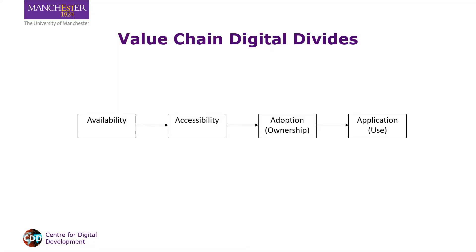Listen to policy makers and strategists and scholars when they talk about the digital divide and you'll find that they actually talk about different things in the value chain. Sometimes they talk about whether or not ICTs are available and accessible — for example, that there is a divide between those who live in range of a mobile signal coverage versus the hundreds of millions who still do not.